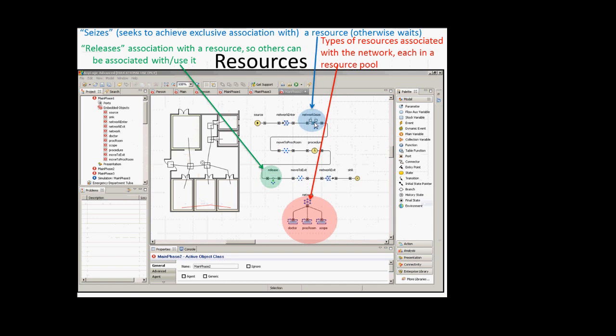If a procedure room is not available right now, you're not going to be able to seize it and you'll have to wait — someone else is using it. This is a pool, so it could be any of the procedure rooms. There's also a distinction between seizing/releasing and attaching/detaching. Seizing is all about logical association — uniquely reserving a resource. Attaching is about whether things spatially follow the agent. Things that have already been seized: will they then physically follow the agent as they move through the system along the paths?